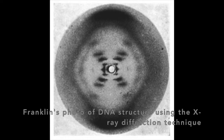Unfortunately, at this time women in science wasn't a huge thing, and so she didn't get the credit she deserved for her discovery. It actually ended up being Maurice Wilkins, her teacher, who got the credit and ended up sharing a Nobel Prize with two other scientists for his discovery surrounding DNA. So that's kind of unfortunate, but that's where the discovery of this double helix structure comes from.